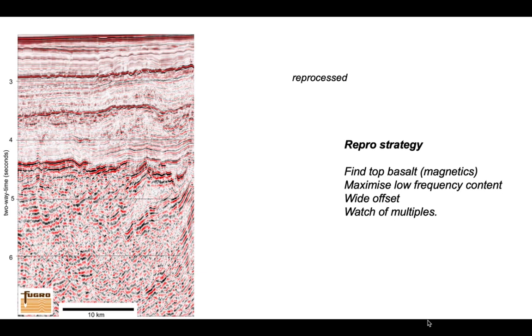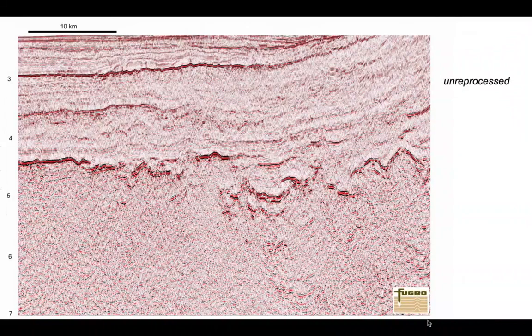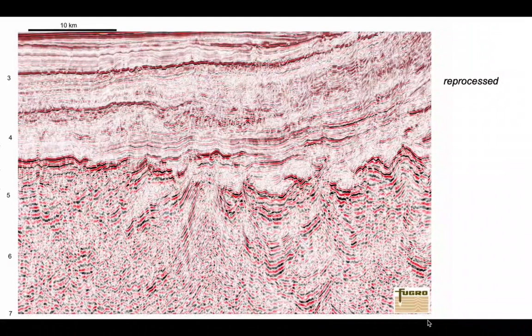Careful reprocessing — informed by the velocity structure and knowledge of the basalt depth and approximate thickness from the magnetic survey — allowed Fugro to reveal deeper structure. Here is an interpretation of the new reprocessed image. Comparing the original legacy profile with the reprocessed version clearly shows the improvement in imaging the deeper structure below the basalt layers.